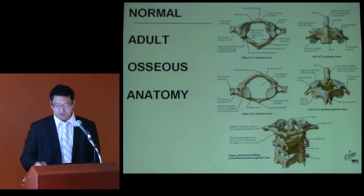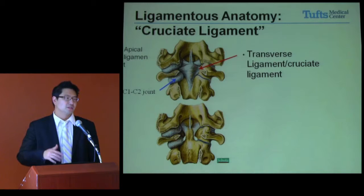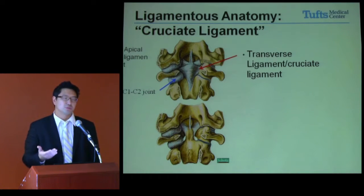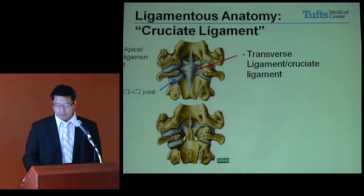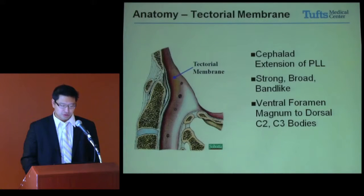We obviously all know the normal anatomy — C1, C2 — how they articulate, the ligamentous structures around them. I'll talk a little bit more about the ligamentous laxity everyone encounters, especially in hypermobility patients, and what we might be able to extrapolate from some of the literature currently available.